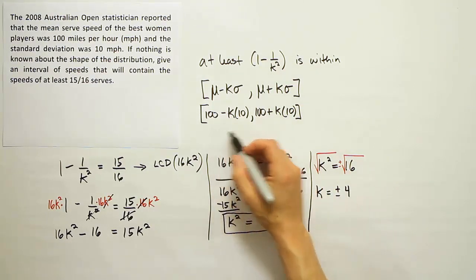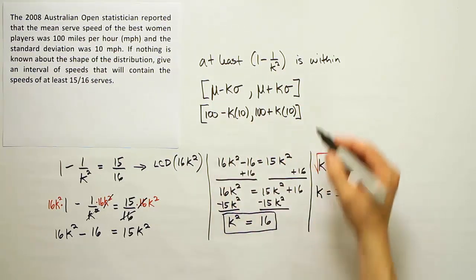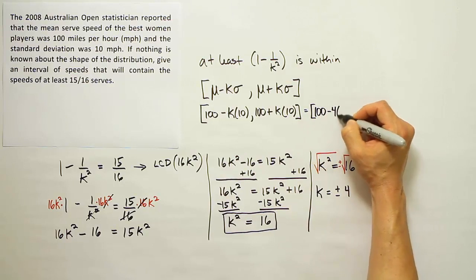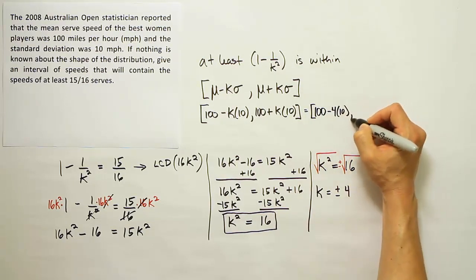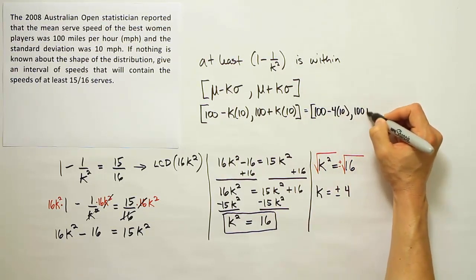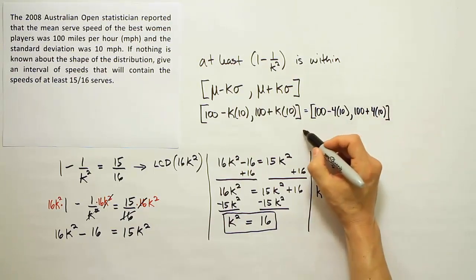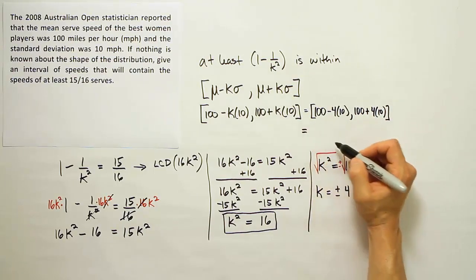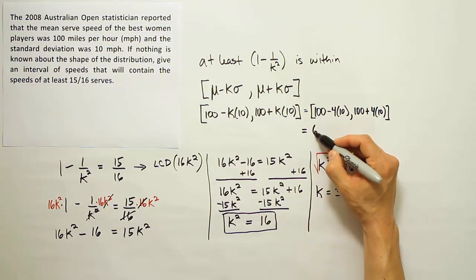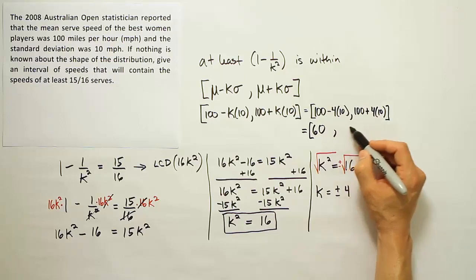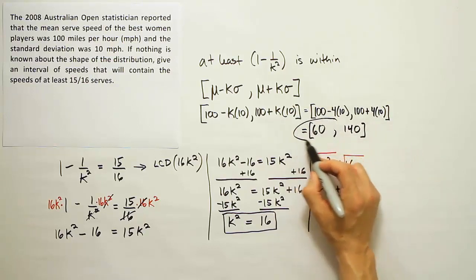Okay, so we'll take the positive 4 and plug it now into our interval, and let's see what that gives us. We will have 100 minus 4 times 10, comma, 100 plus 4 times 10. And so this will give us the final result of 100 minus 40, which of course is 60, and then 100 plus 40, which of course is 140. And that's our final result.